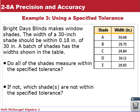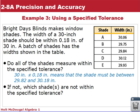So look at the table. Do all the shades measure within the specified tolerance? Meaning they're all within 0.18 inches of 30. To determine this, we take 30 inches plus or minus 0.18 inches, which means the shades must be between 29.82 and 30.18 inches.